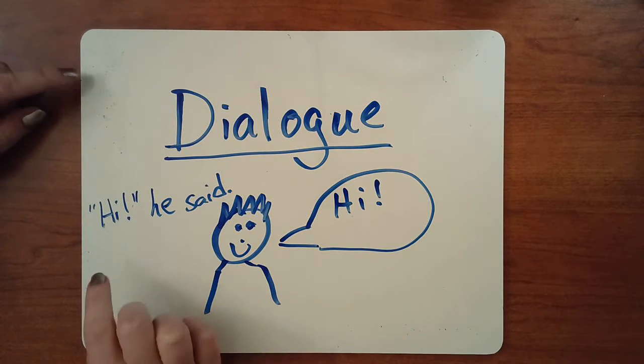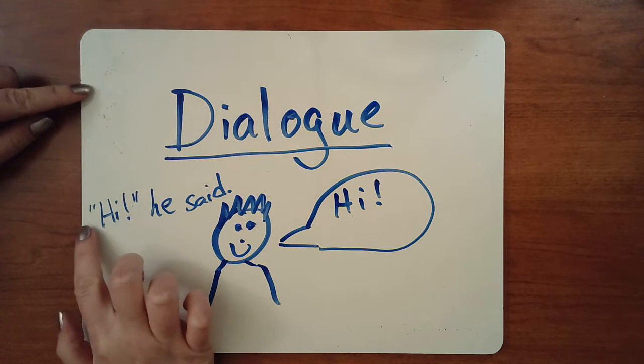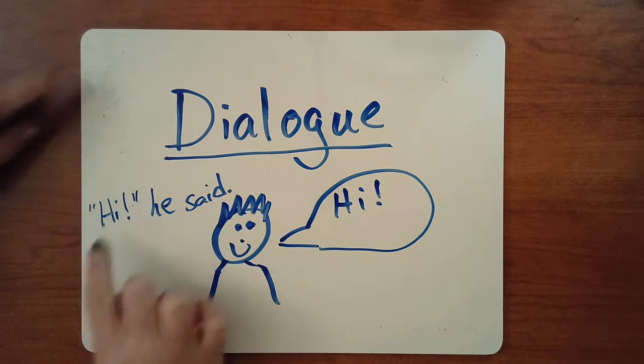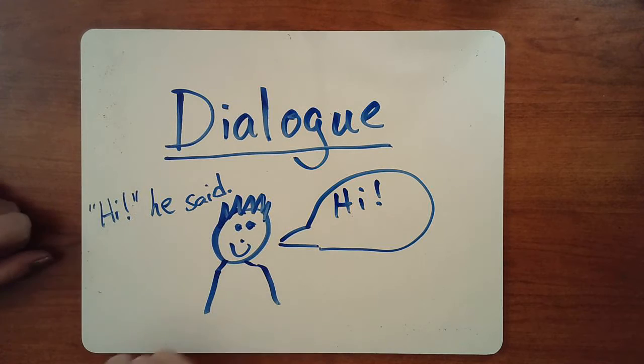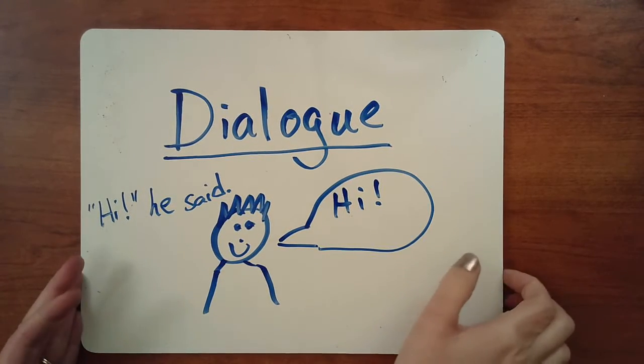And when we do dialogue in the story, we do it with quotation marks. We put these quotation marks around the words that the character said. Writers use this all the time.